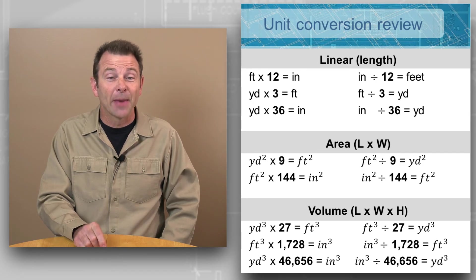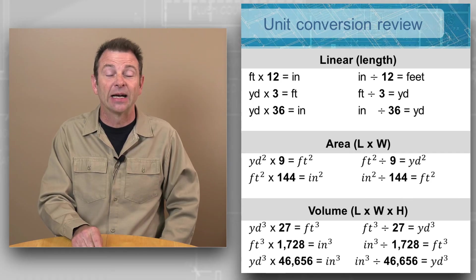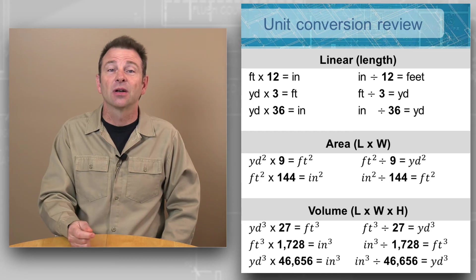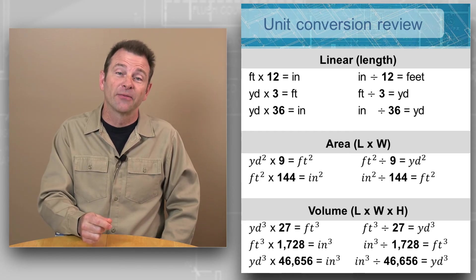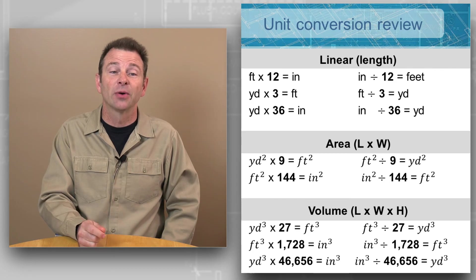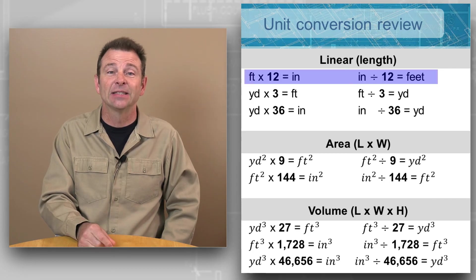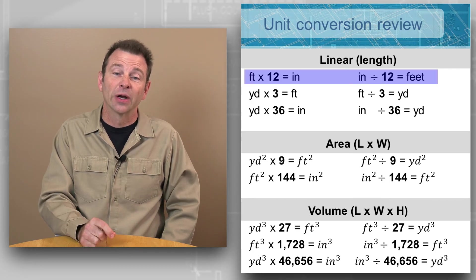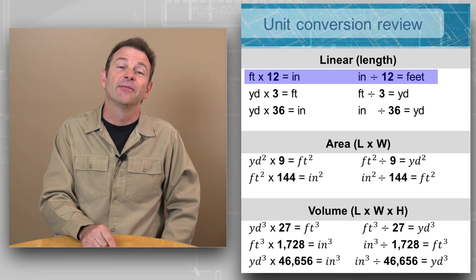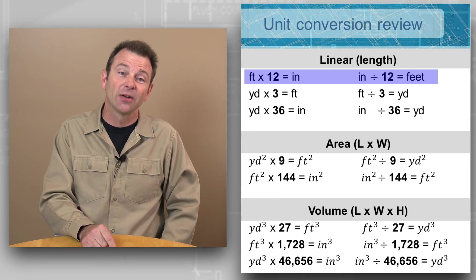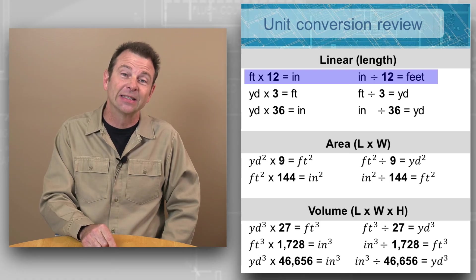Let's do a quick review starting with our linear unit conversions. We need to remember just some simple numbers and what those numbers apply to. Starting with linear or length measurement unit conversions: if we're going from feet to inches or inches to feet, we'll always use 12, because there are 12 inches in every foot.